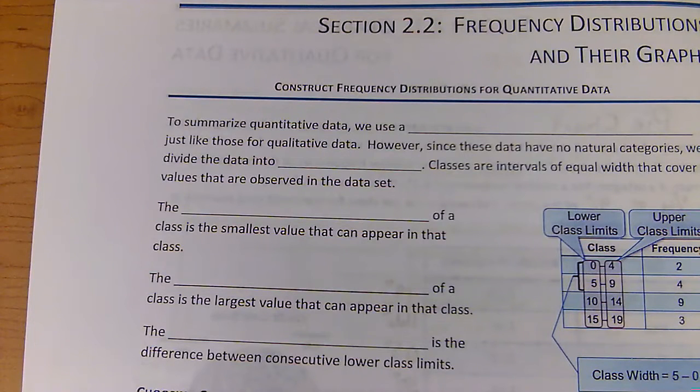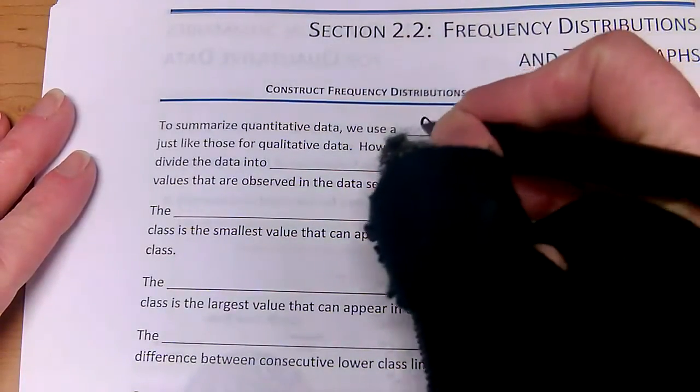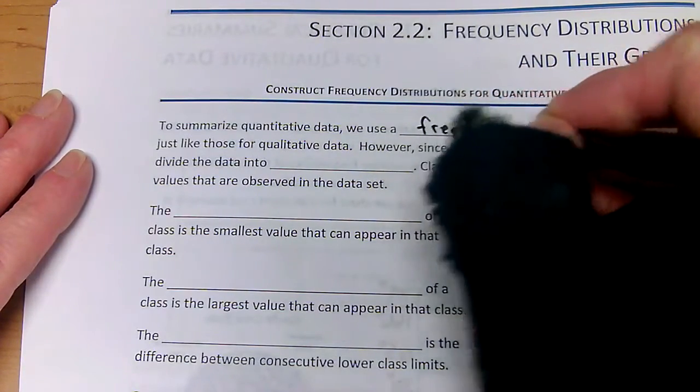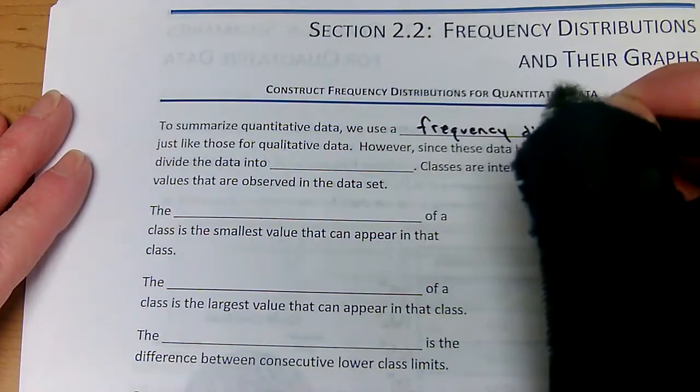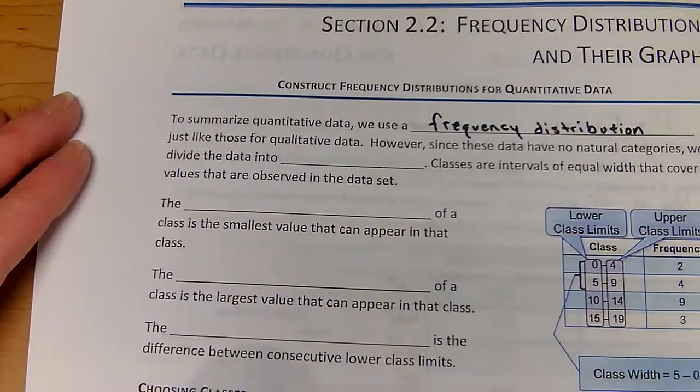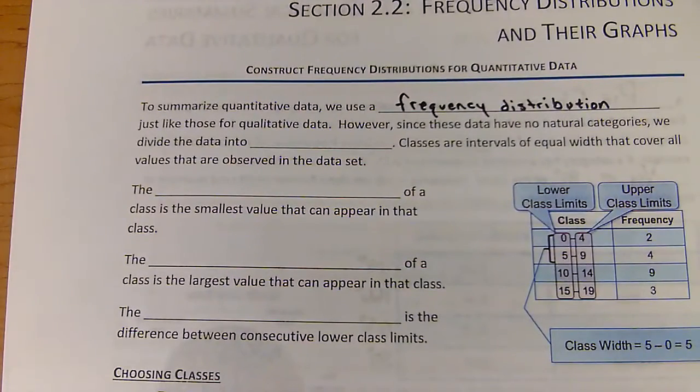In section 2.1 we looked at qualitative data, that categorical data with labels. Now we're going to start looking at quantitative data. To summarize quantitative data we use a frequency distribution, just like we did for qualitative data.